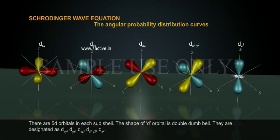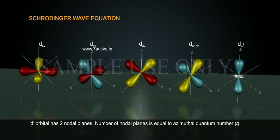D orbital has two nodal planes. Number of nodal planes is equal to azimuthal quantum number, L.